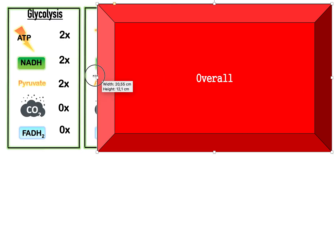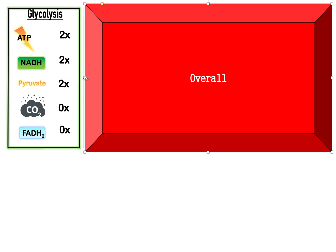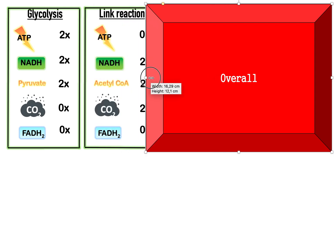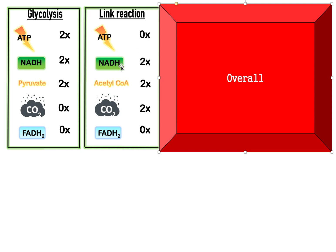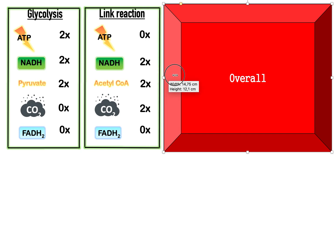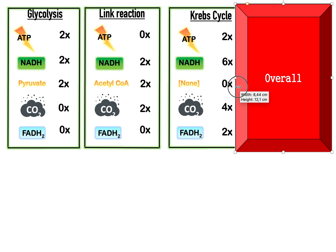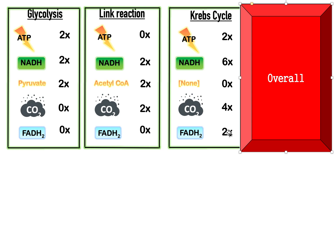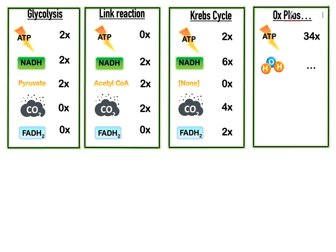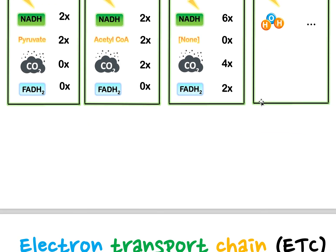So overall from those three processes: glycolysis gave us a little ATP, NADH, and pyruvate. The link reaction made no ATP but produced NADHs. The Krebs cycle made only two ATPs but a whole load of NADHs and some FADH2. So far we haven't made much ATP, which is the whole purpose of cell respiration — but we're not done. This last part, oxidative phosphorylation, will create 34 ATPs, and also produce some water molecules as a byproduct.